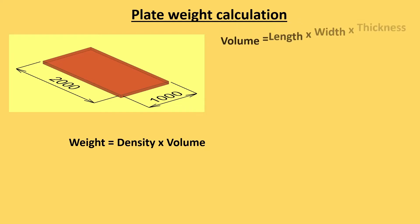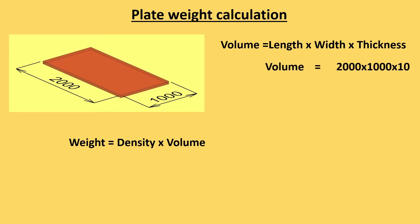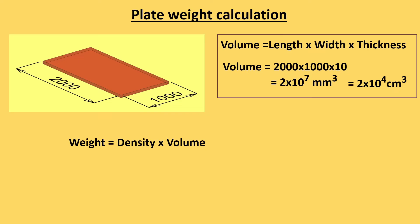So first of all we calculate the volume which is multiplication of length, width and thickness. So when we multiply all three figures of the plate we will get volume of plate which is 2 into 10 raised to power 7 mm cube and we will convert it into centimeters. So we get 2 into 10 raised to power 4 centimeter cube.